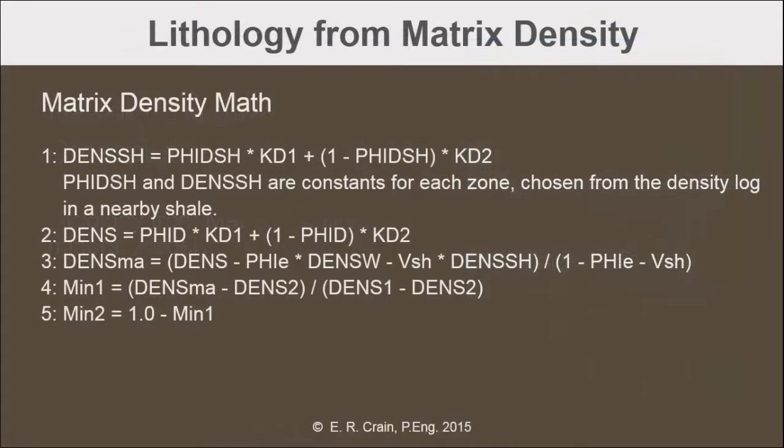The mathematics for a two-mineral model are not overly complicated. We first find the density of the shale — that's dense-sh — in equation number one, from the porosity of the shale on the density log. The KD1 and KD2 terms depend on the scale of the log. If you have a sandstone scale, you'll use one particular set of numbers listed in your course notes, and if it's a limestone scale, you'd use a different set of numbers for KD1 and KD2.